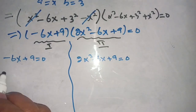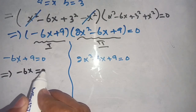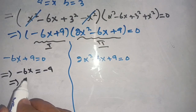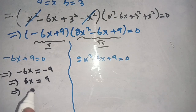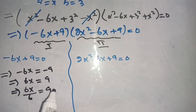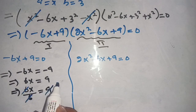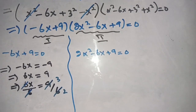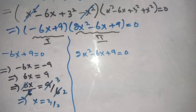Solving the first equation: minus 6x equals minus 9, so 6x equals 9. Dividing both sides by 6, we cancel 6 by 6, and 9 divided by 6 simplifies to 3 over 2. This gives x equals 3 divided by 2.